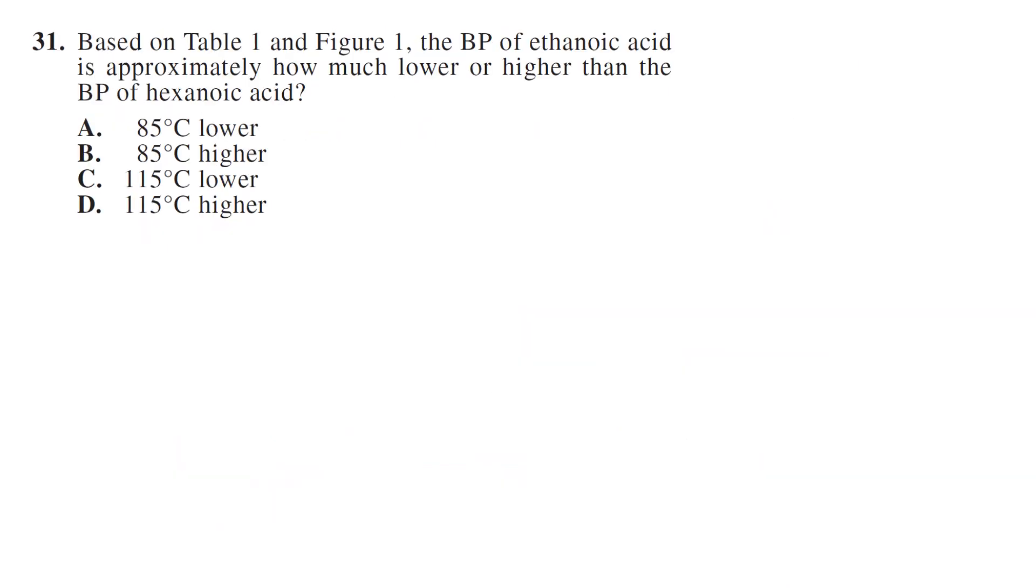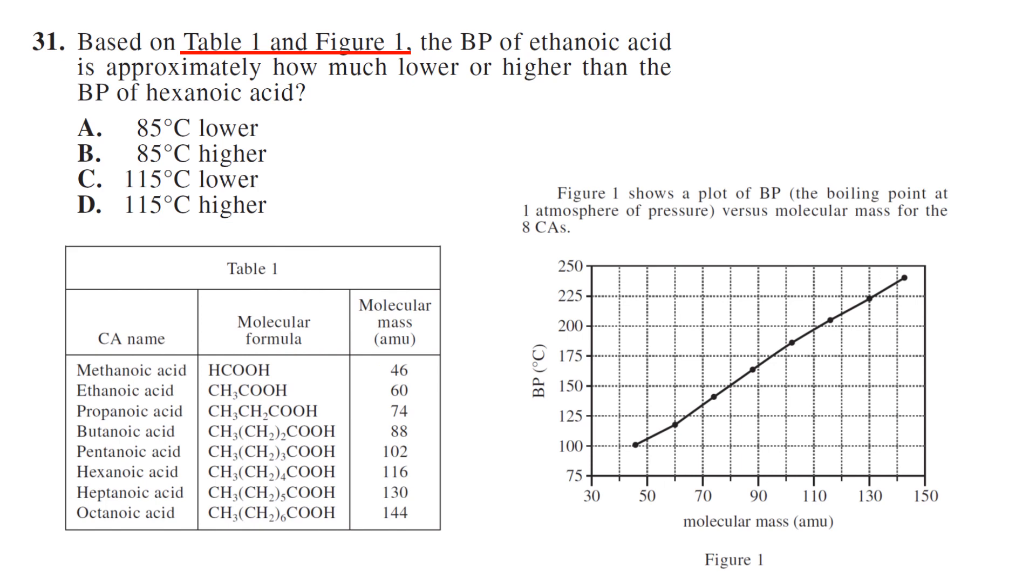31. Based on table 1 and figure 1, the boiling point of ethanoic acid is approximately how much lower or higher than the boiling point of hexanoic acid? So ethanoic acid has a molecular mass of 60, which puts it at having a boiling point of 120-ish, 125 maybe. We're going to say 120.